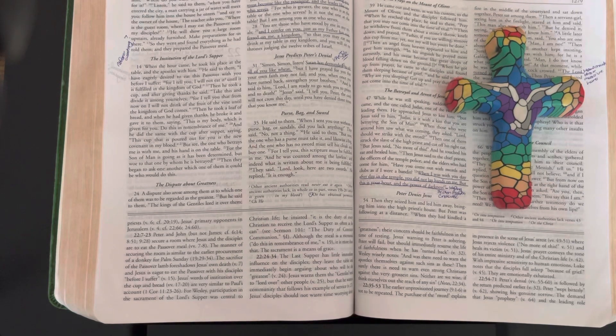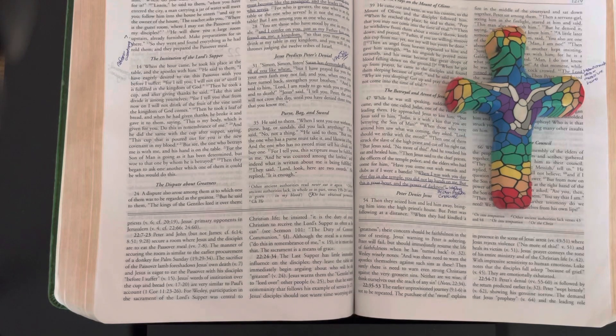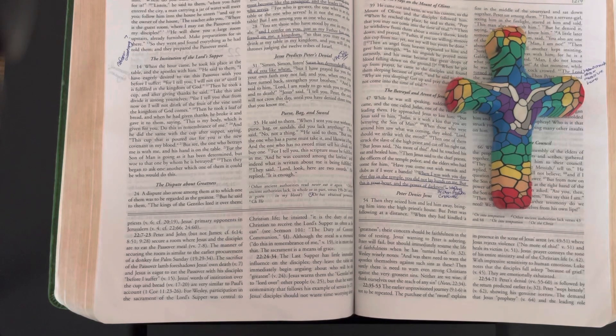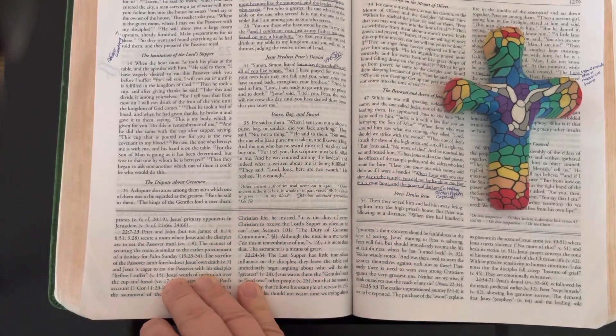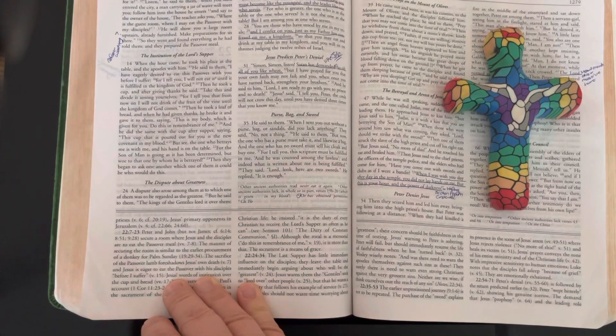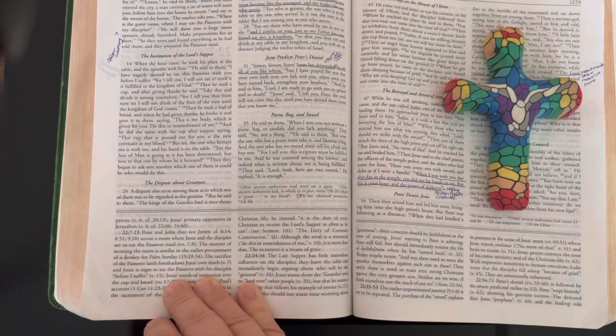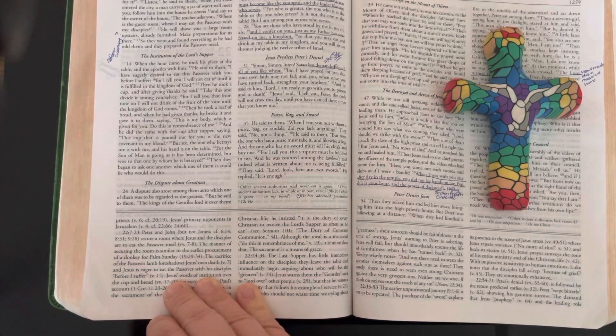A dispute arose among them as to which one of them was to be regarded as the greatest. But he said to them, "The kings of the Gentiles lord it over them, and those in authority over them are called benefactors. But not so with you. Rather, the greatest among you must become like the youngest and the leader like one who serves."